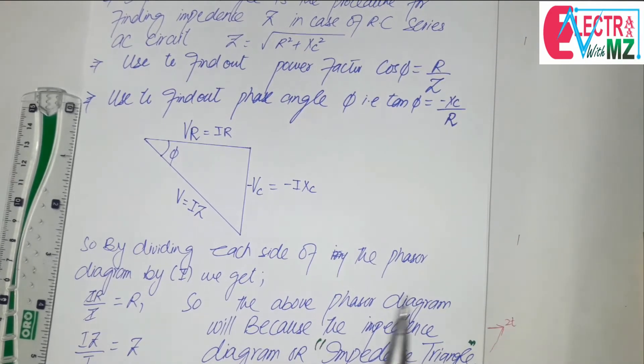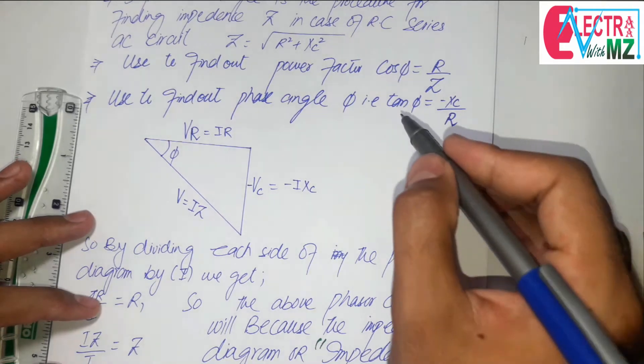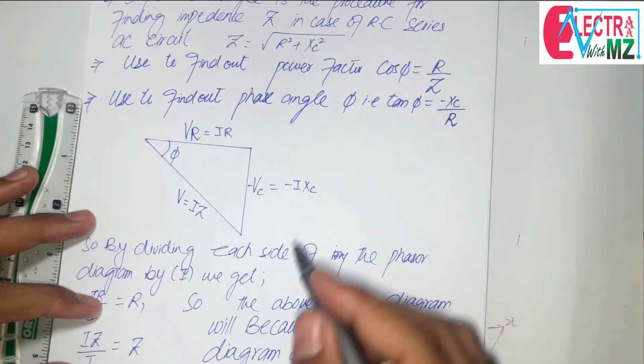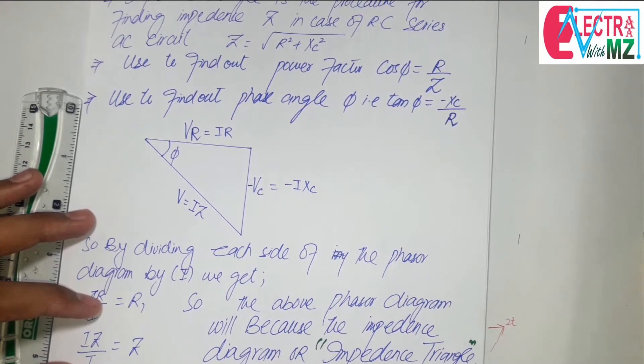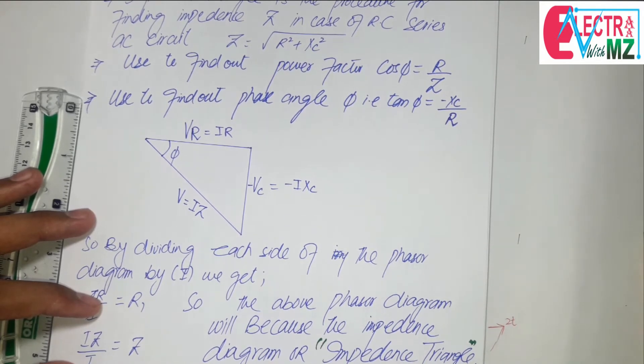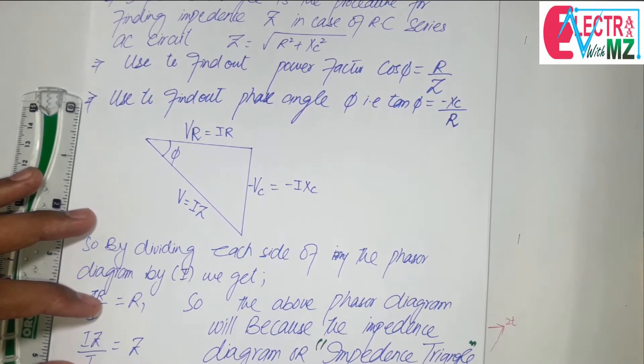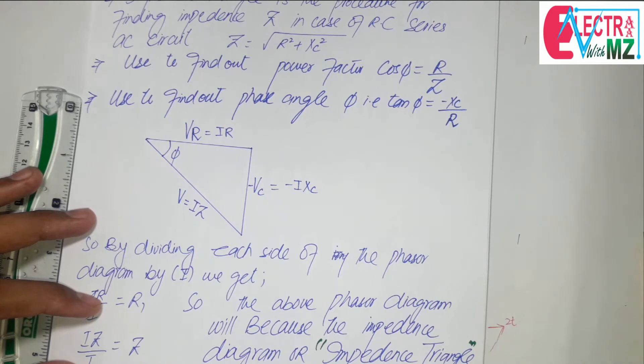Because tangent phi is equal to minus XC over R, and phi is equal to tangent inverse of XC over R. This negative sign only shows that current I leads voltage by 90 degrees.